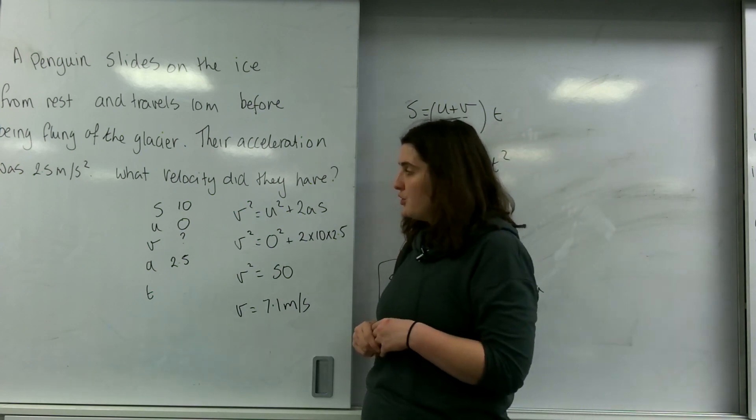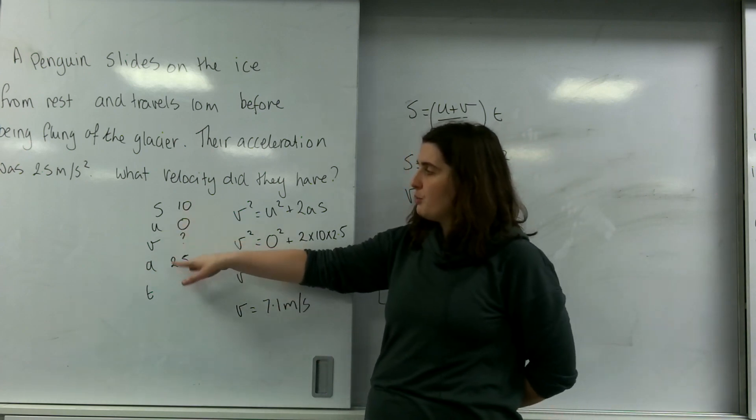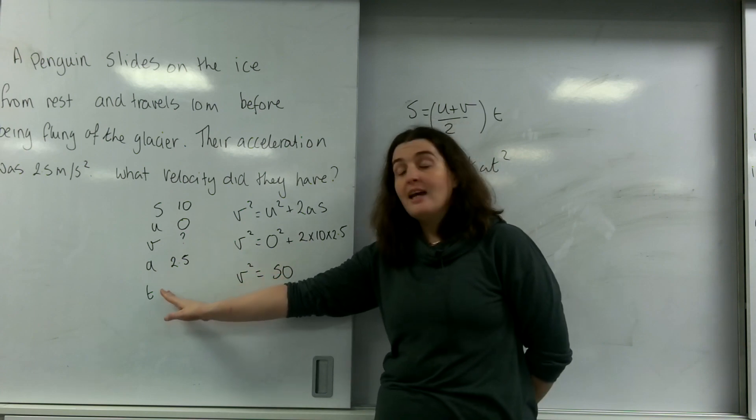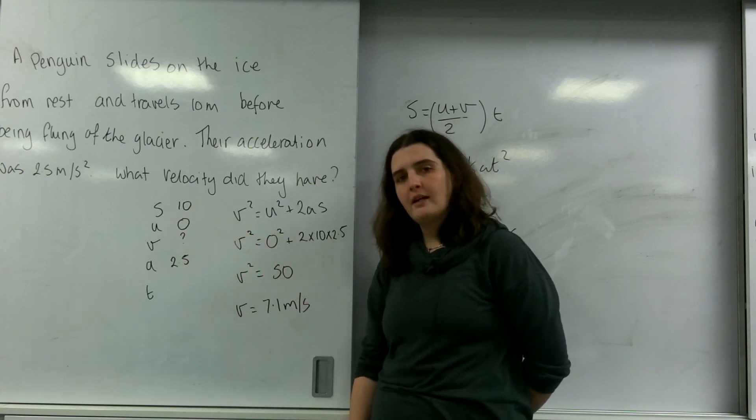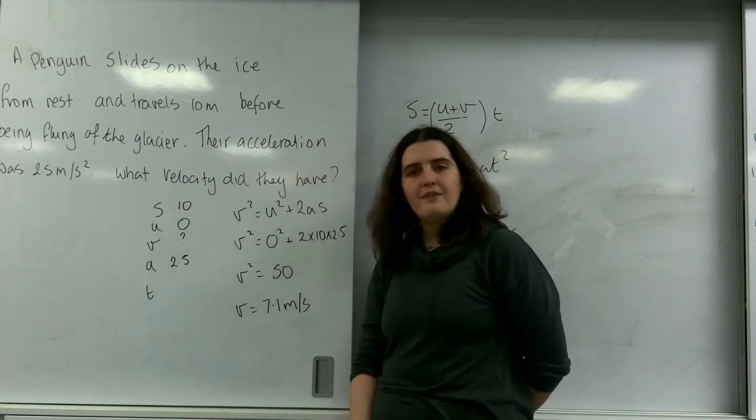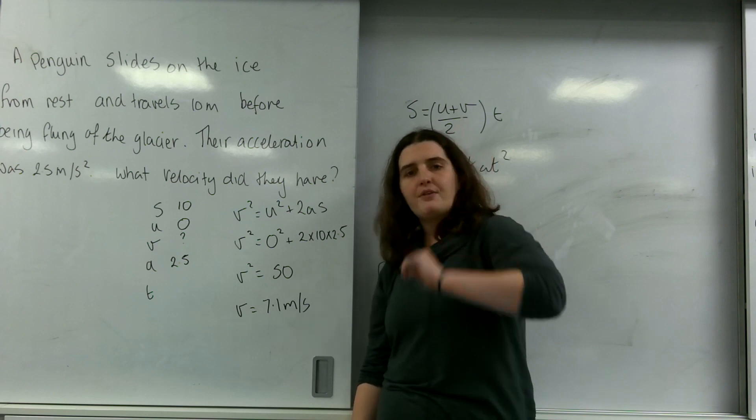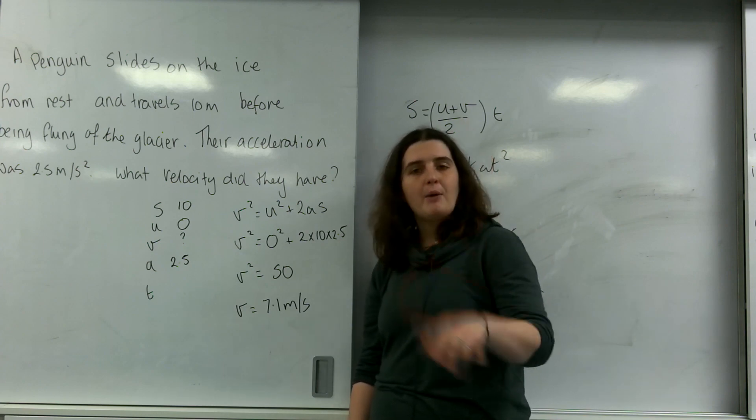Now it doesn't matter if you wanted to, you could have used V equals U plus AT to find T, and then found something else later. You're more than welcome to do that. If you want to find all missing five things, you can. The rules are, you need at least three things filled in the SUVAT box to be able to solve.